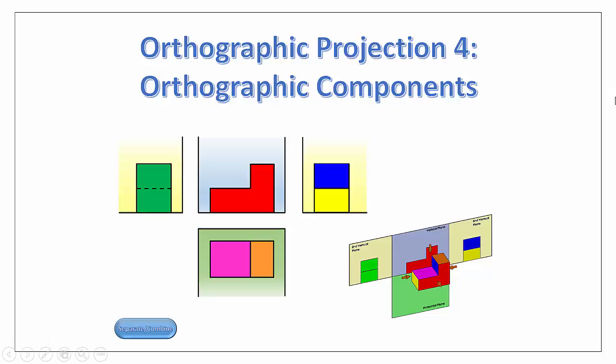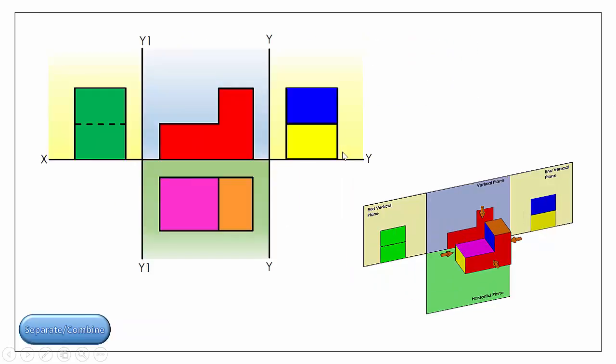Hello and welcome to the fourth video in our webcast series on the topic of orthographic projection. In our previous videos we were looking at how we were able to get our various orthographic views by projecting the surface of an object onto a plane of reference, and in our last video we were looking at how to connect each of those views together. In this video we're going to look at our various planes and how they're represented onto our sheet of paper.